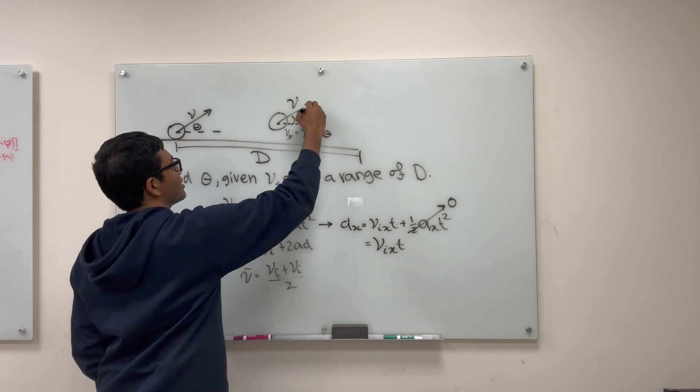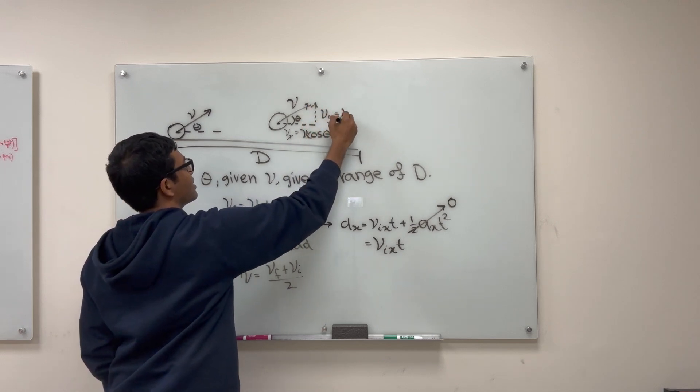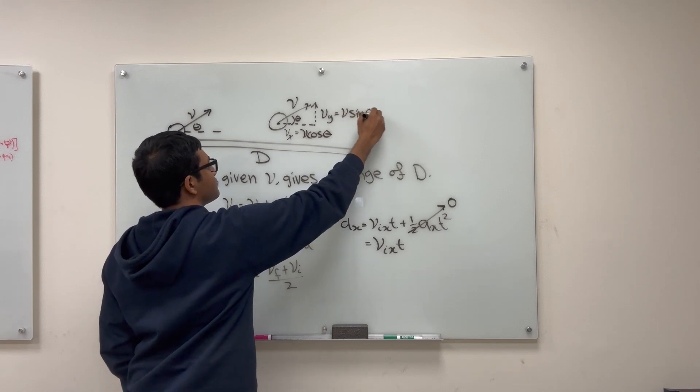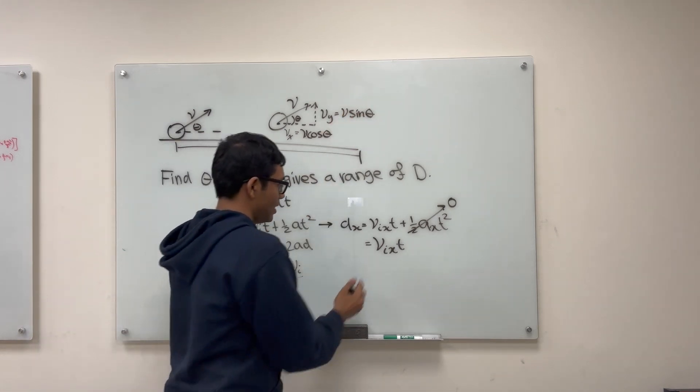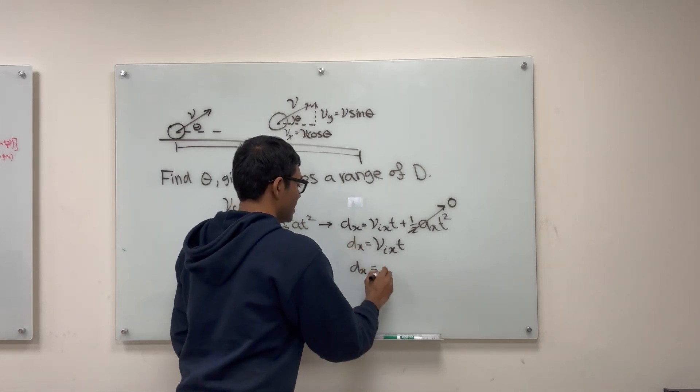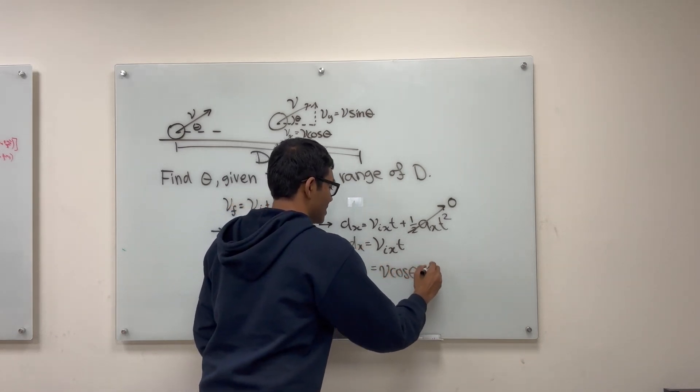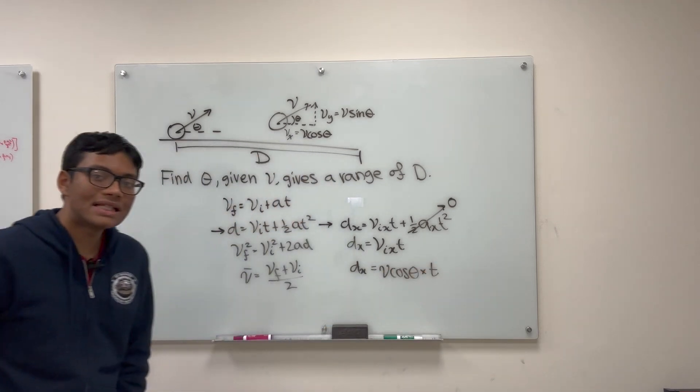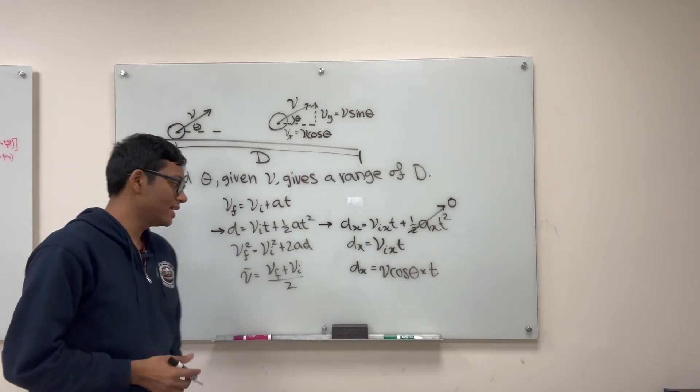And while we're at it, we can write down vy as well, that'll be v sine theta. So now here I can write down that the horizontal range, dx is v cosine theta times t. So now we just have to find t. How long does the ball spend in the air?